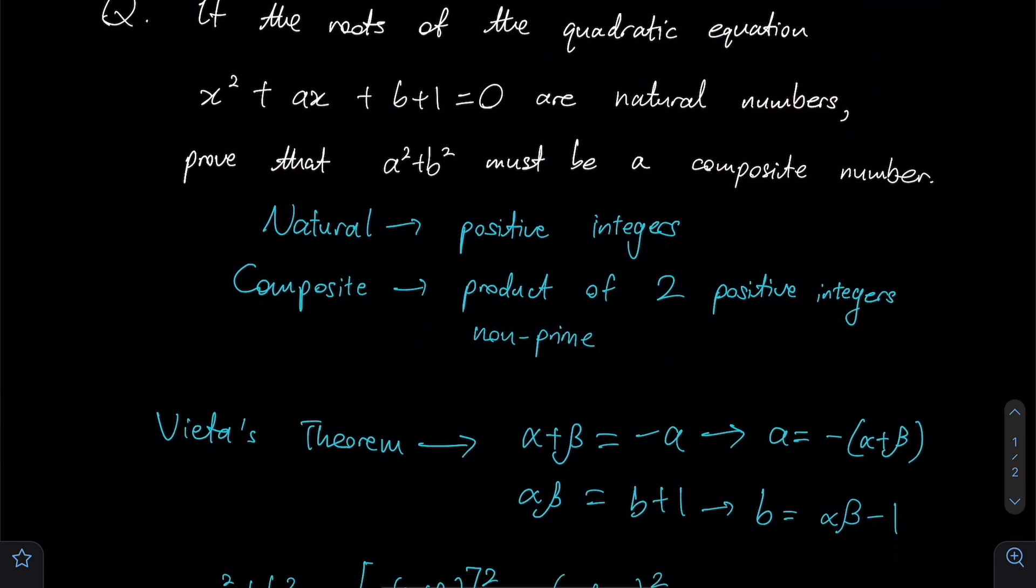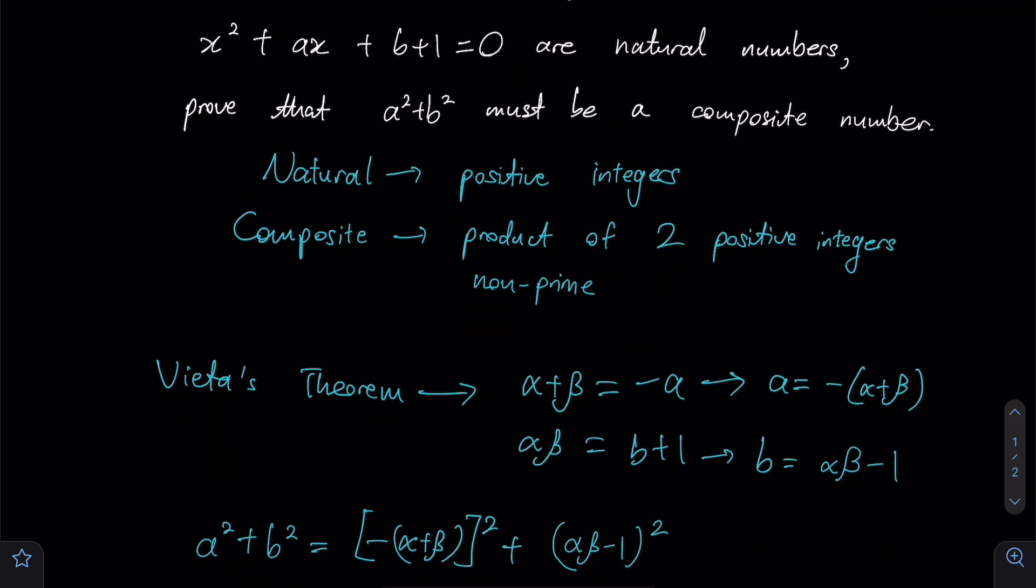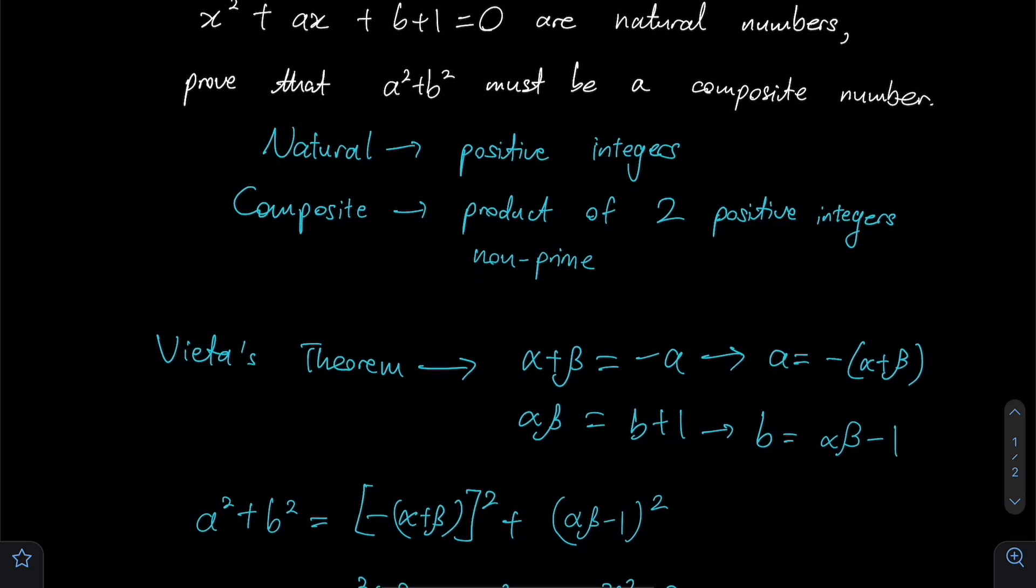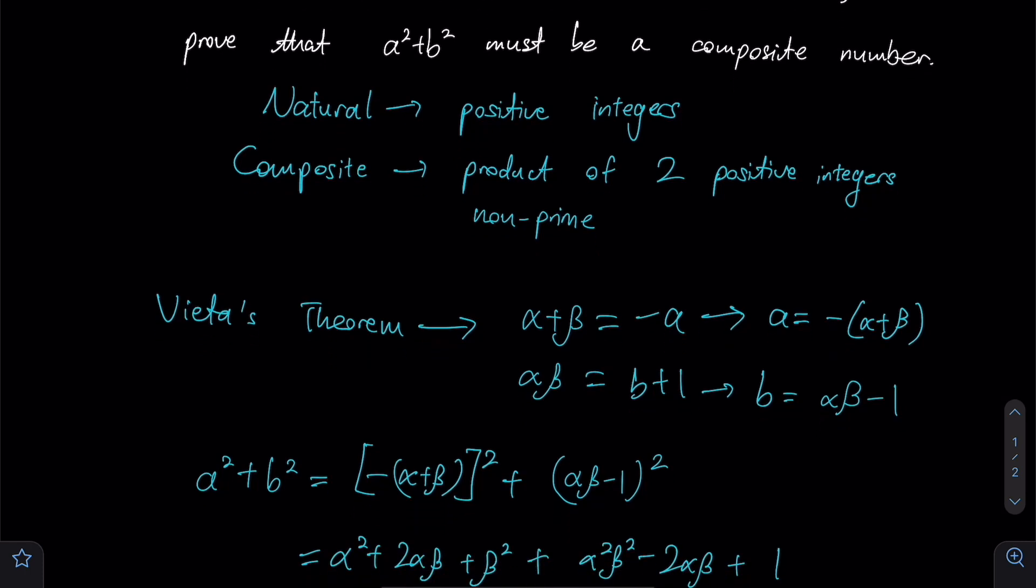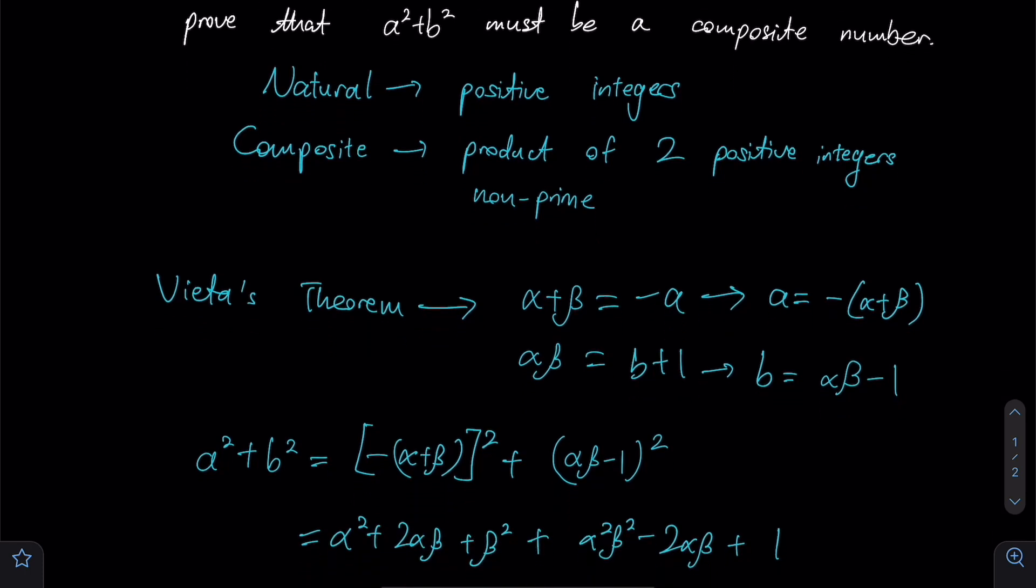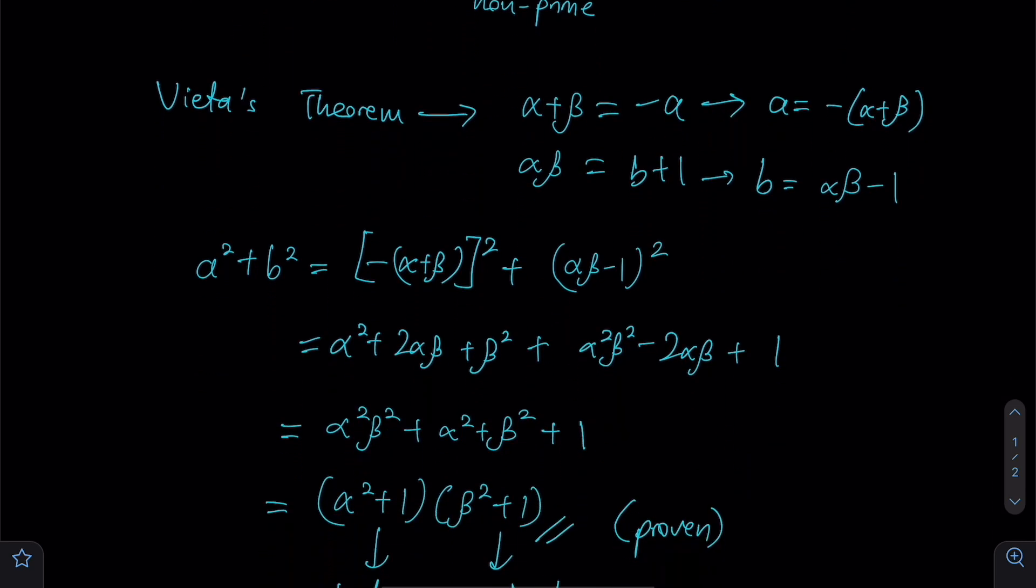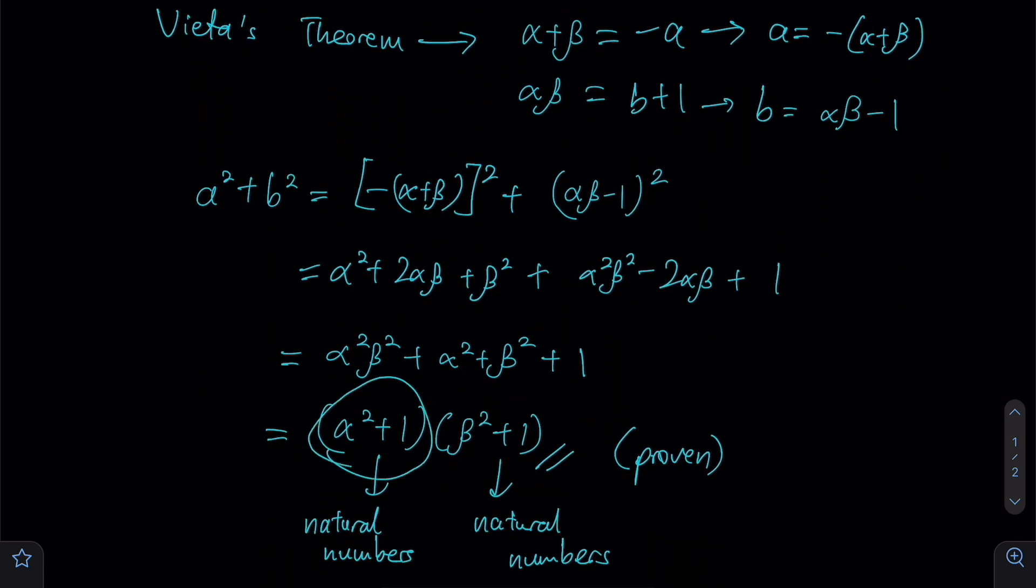From the top: firstly, since we are presented with a quadratic equation where all my coefficients are known, instead of finding each individual root it might be a better idea to express our roots, especially the sum and the product of roots, as a combination of a and b. Then start working from a² + b², express it in the form of alpha and beta, and show that since we want to prove it is a composite number, show that it ends up being a product of two positive integers just like this.